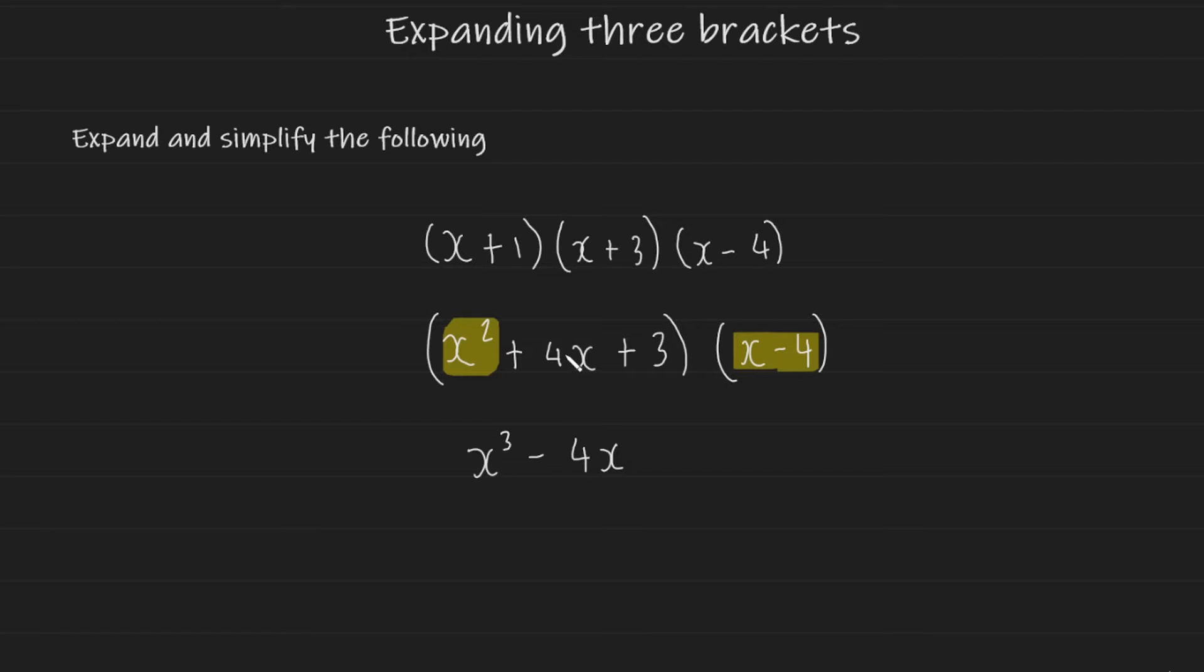I'm then going to repeat this step with the middle term from the left bracket. So it's going to be plus 4x multiplied by x and plus 4x multiplied by negative 4. And this is going to give us plus 4x squared minus 16.